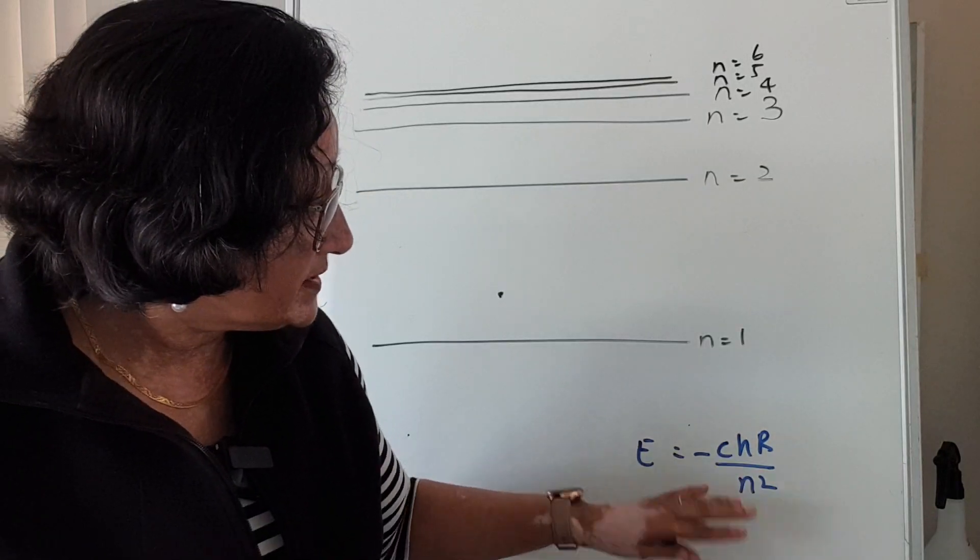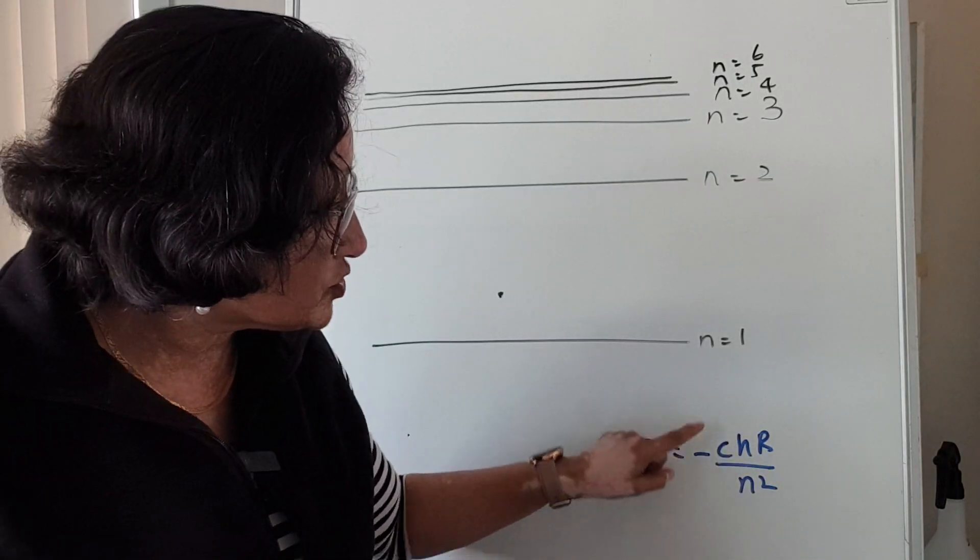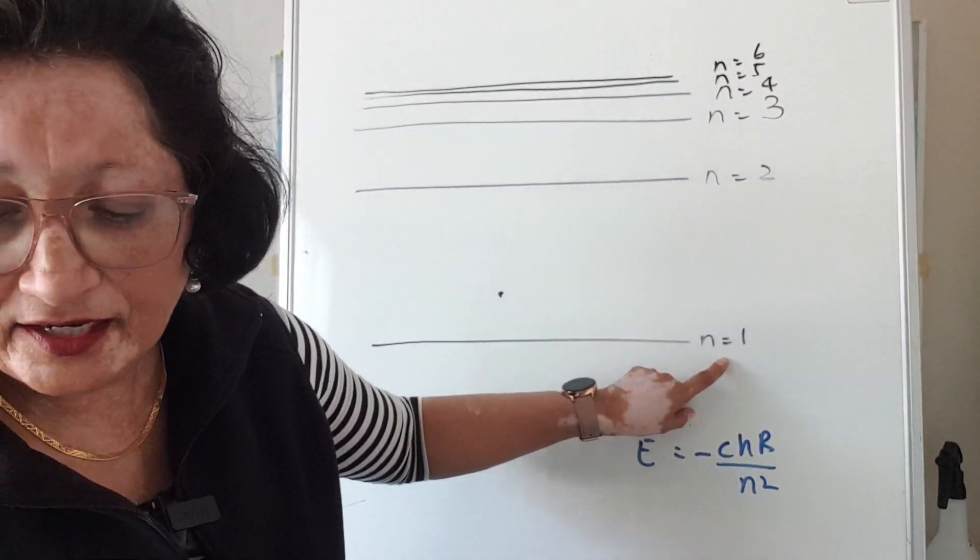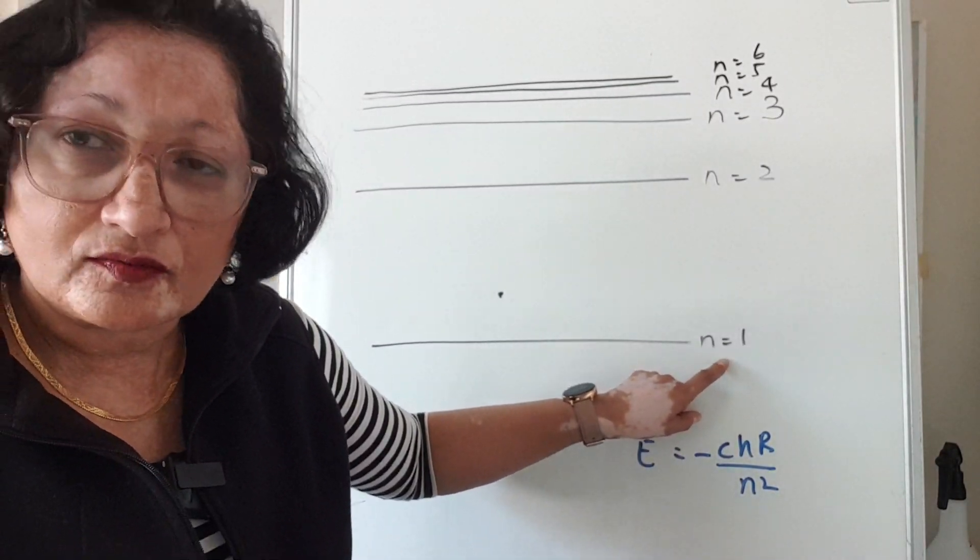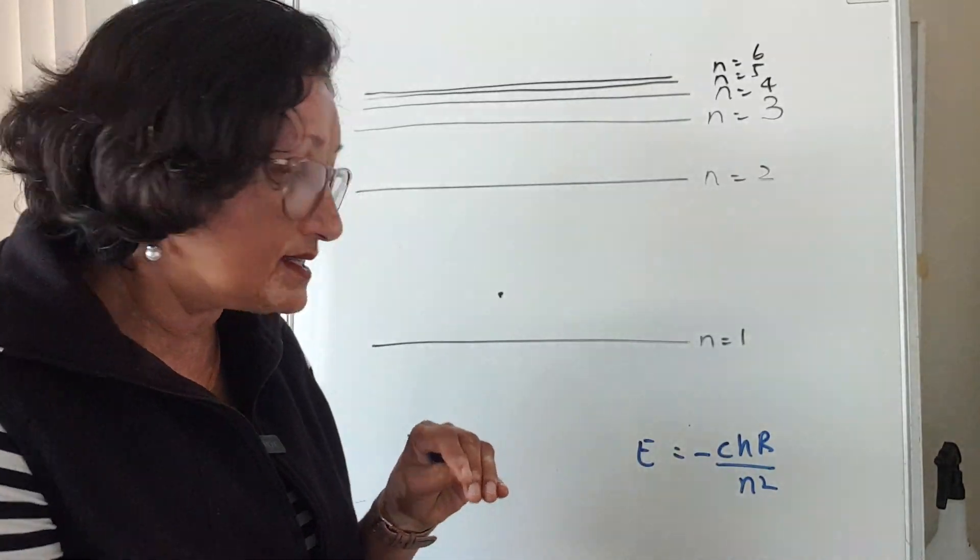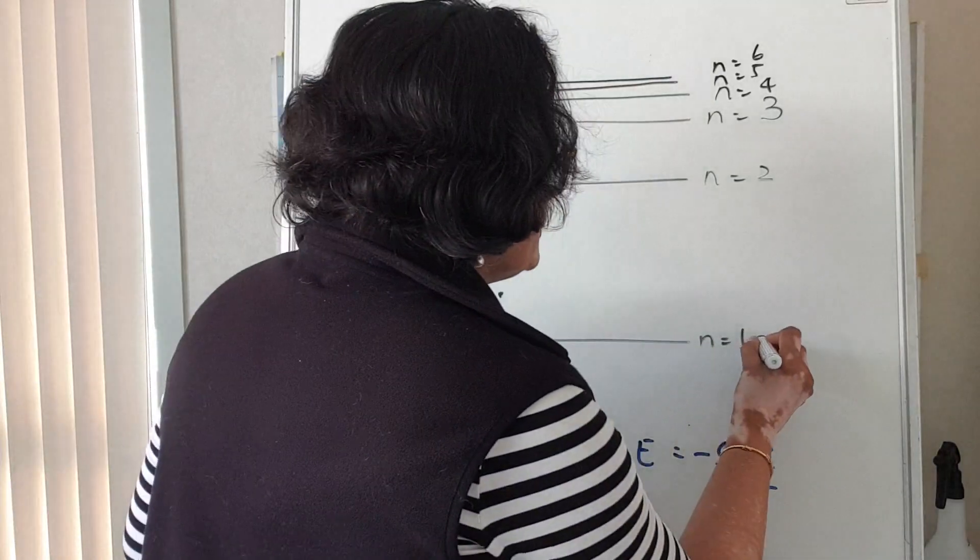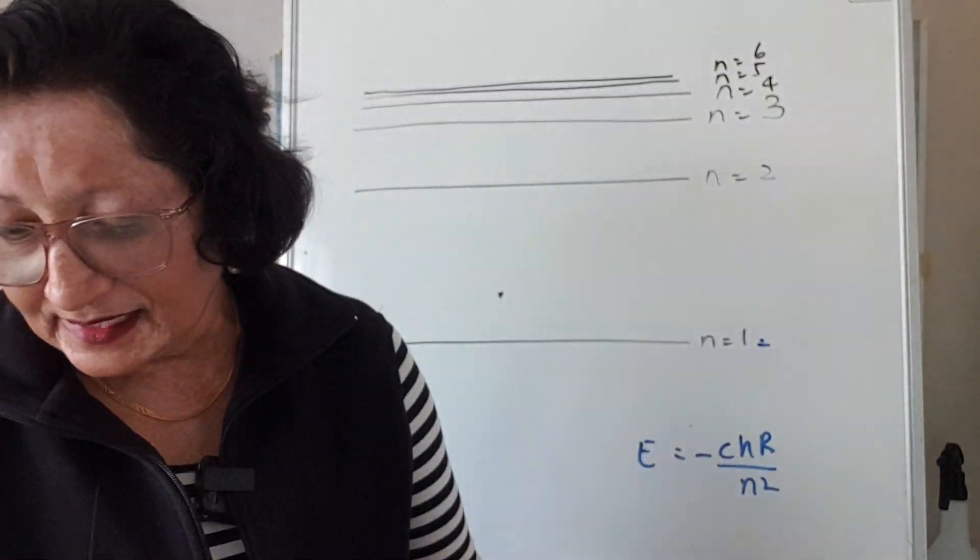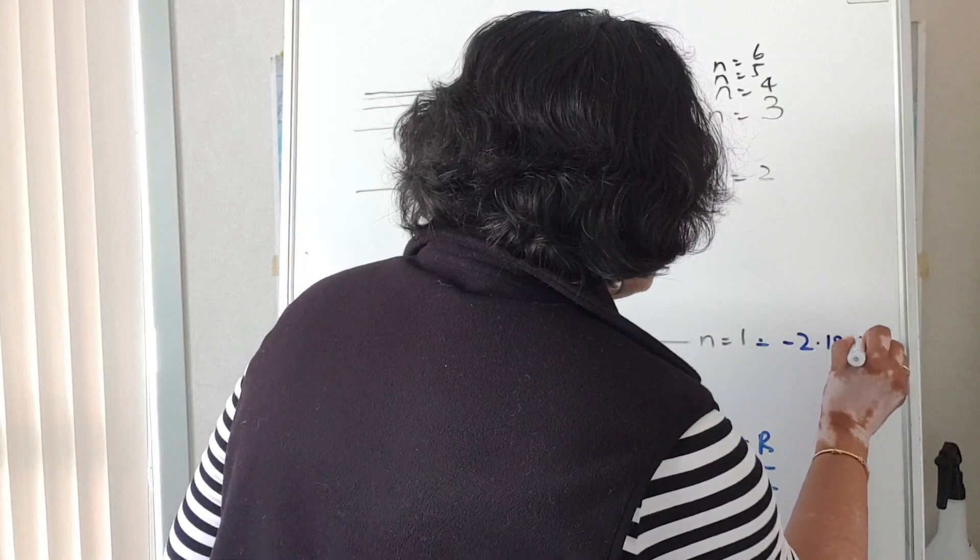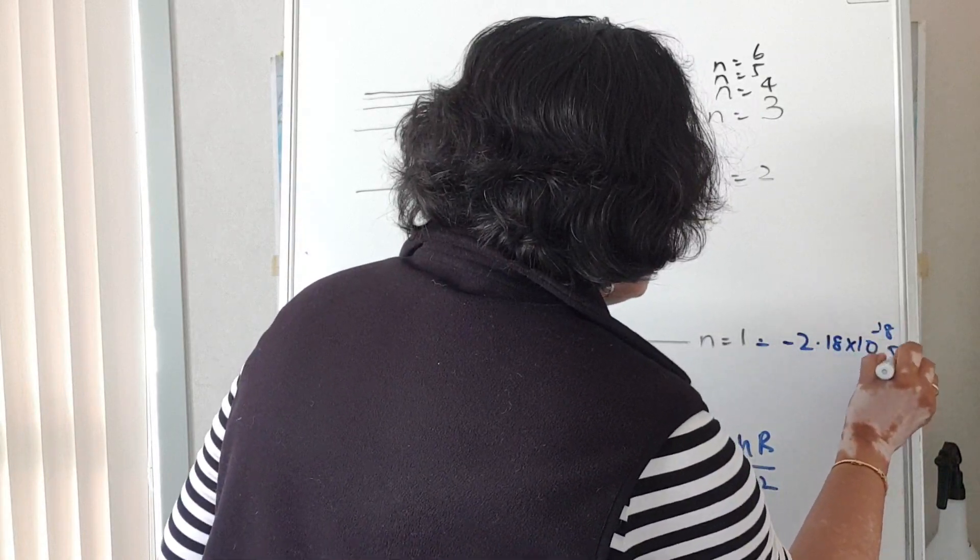All these are negative values, so when you put all these numbers and calculate the energy of the electron in that ground state, this level 1 is also called the ground state, that's what's closest to the nucleus and it's negative, you get a number like negative 2.18 times 10 to the power of negative 18 joules.